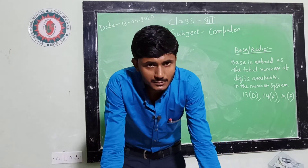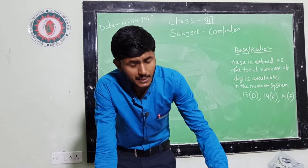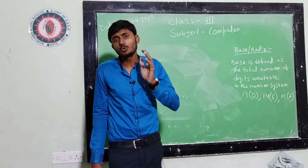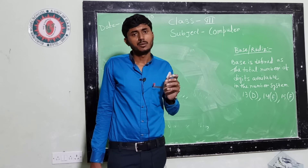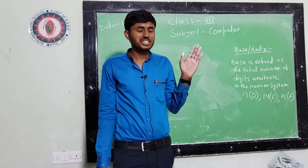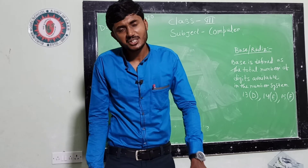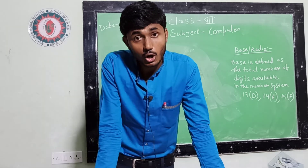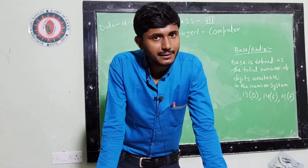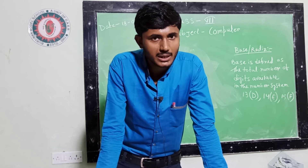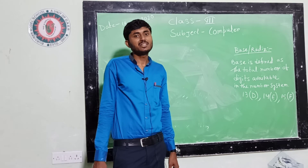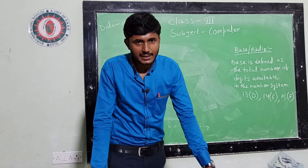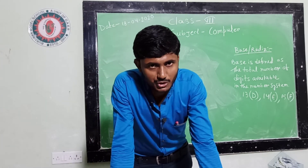Today I discussed a brief introduction about number system. Number system is basically divided into two types: positional number system and non-positional number system. Positional number systems are binary number system, octal number system, and decimal number system. Binary number system contains only two digits, 0 and 1 — that is why the base or radix is 2. Octal number system contains 0 to 7, total 8 digits, so its base or radix is 8. Decimal number system contains total 10 digits, from 0 to 9.